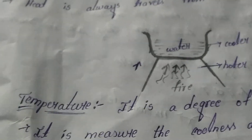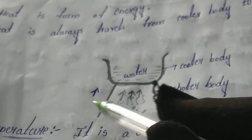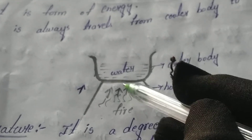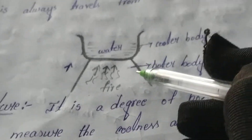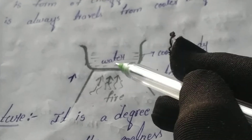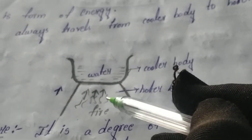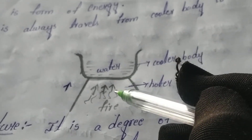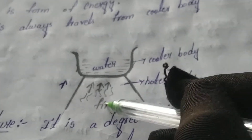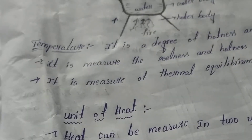Let us see a small example to understand heat better. We take a fire, a stove, and put a pan with water on it. Here fire is the hotter body and normal water is the cooler body. When we apply the fire, the water will get heated up. We observe that the water is gaining heat energy — heat is transferred from the hotter body to the cooler body. This is our definition.